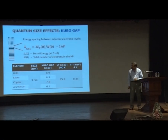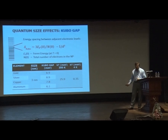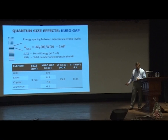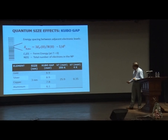To this audience I don't have to introduce quantum size effects, but just to remind you about the so-called Kubo gap: when you go to small particles, the energy levels become discrete, and this discreteness is measured by the Kubo gap. At any particular temperature, the average inter-level spacing is given as an inverse function of the volume of the particle.